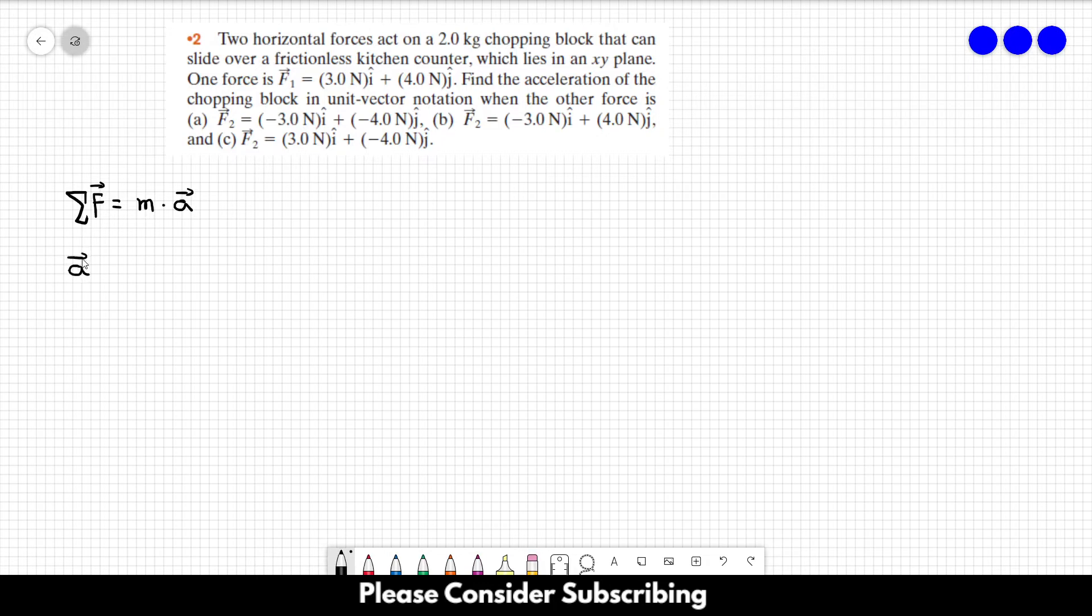So the acceleration would be the sum of the forces over mass. And in this case, we only have two different forces, F1 and F2. So it would be F1 plus F2 over mass. And we have to do this for letter A, letter B and letter C. This is all we have to do.